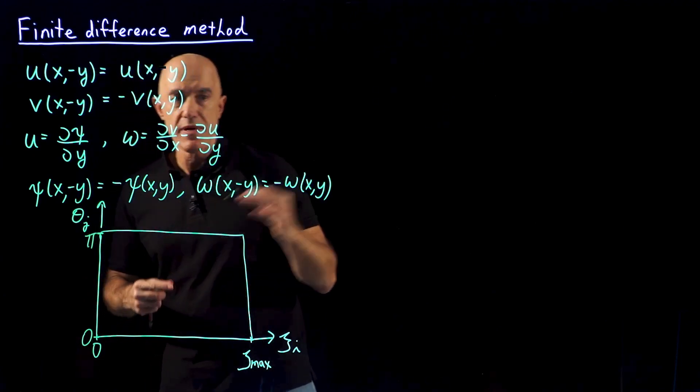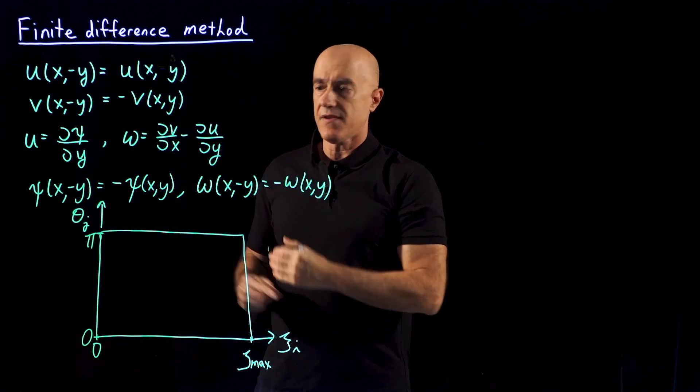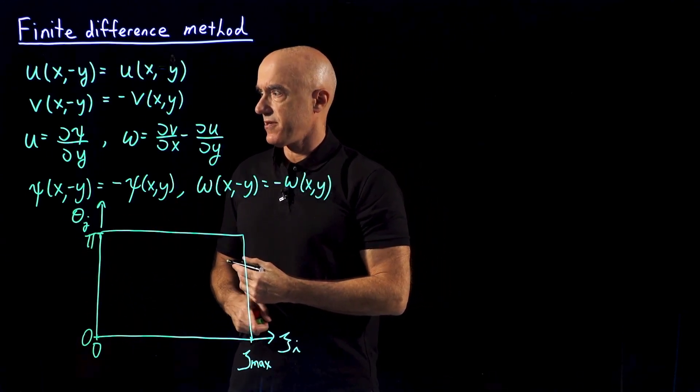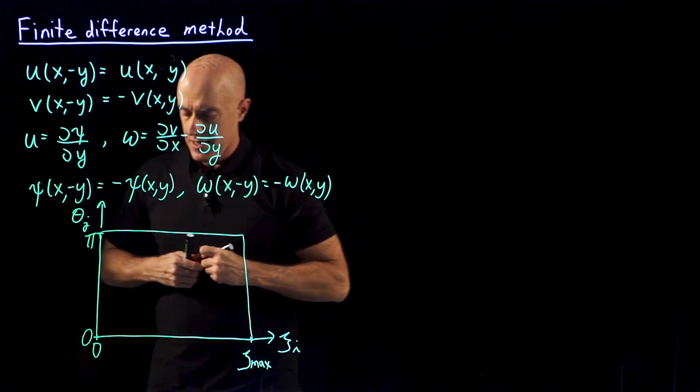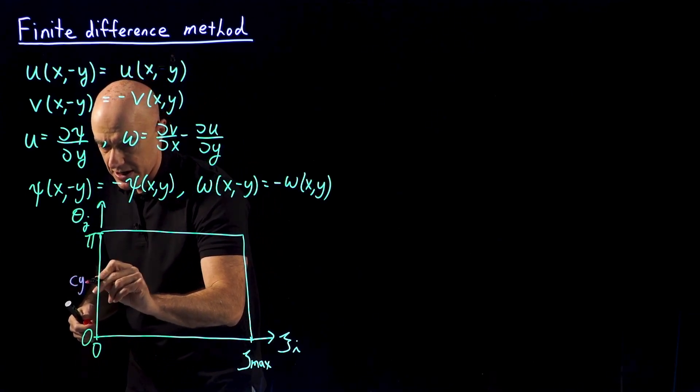π will be the midline in front of the cylinder. Behind the cylinder, in front of the cylinder. This is on the cylinder here, this is the cylinder, this side.